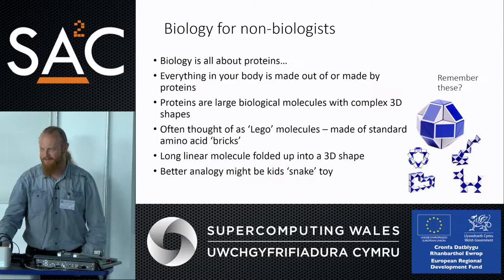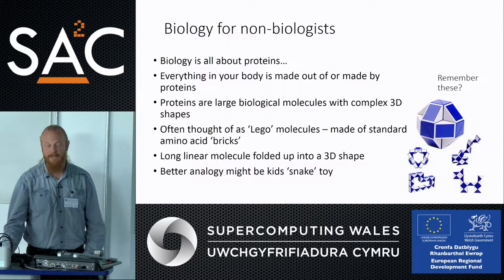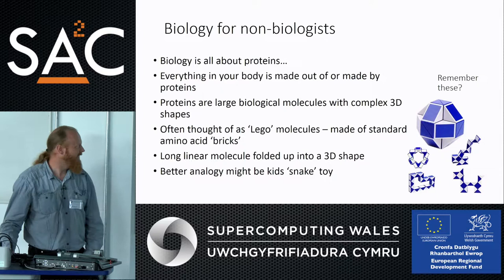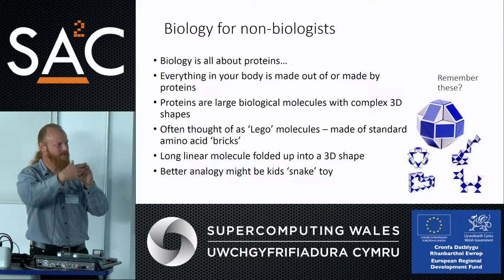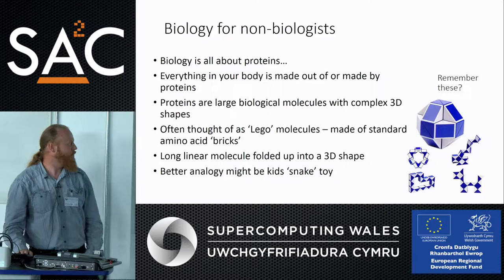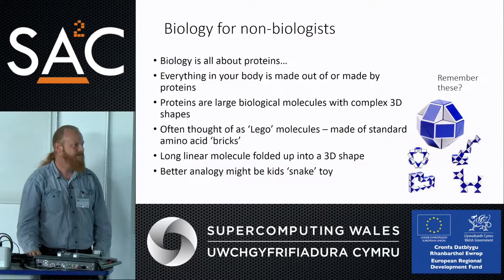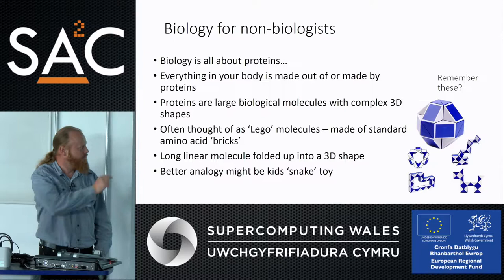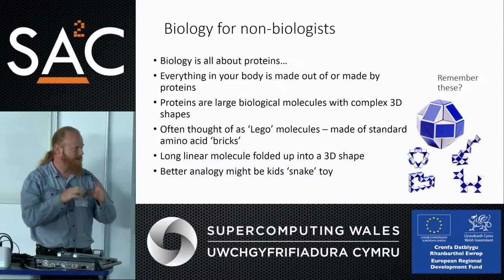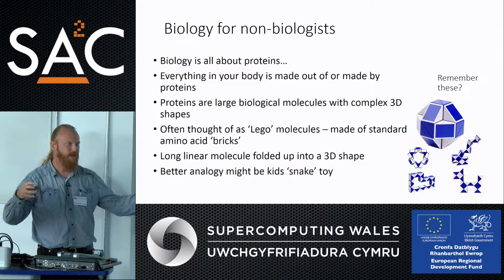Any protein is a long linear molecule that then folds up into a complex 3D shape — actually more like a kids' toy snake that you could fold around in different ways to make different shapes. Proteins are quite like that, but rather than all units being the same shape, there are 20 different amino acids coded for by our DNA, each a slightly different shape but with a fair amount of flexibility, so you can see how they fold up from a long thin molecule into a complex shape.